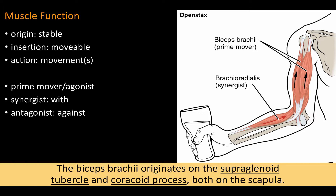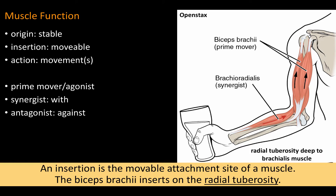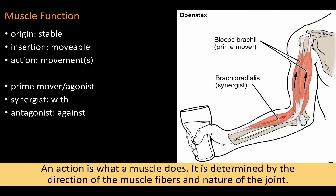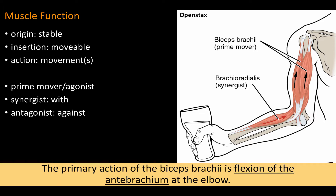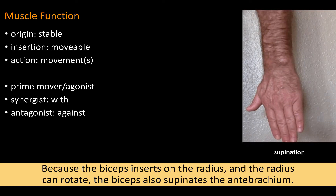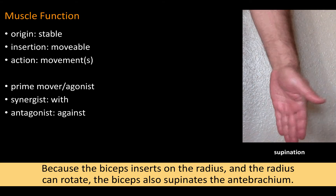The biceps brachii originates on the supraglenoid tubercle and coracoid process, both on the scapula. An insertion is the movable attachment site of a muscle. The biceps brachii inserts on the radial tuberosity. Insertions on limbs tend to be distal. Insertions on the torso may be superior, inferior, or lateral. The action of the biceps brachii is flexion of the antebrachium at the elbow. As the biceps contracts, the radial tuberosity is pulled towards the scapula, the arm bending at the elbow. Because the bicep inserts on the radius and the radius can rotate, the biceps also supinates the antebrachium.